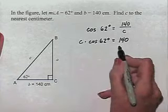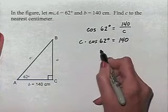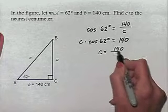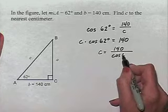And then next, divide both sides of the equation by the cosine of 62 degrees to find out that C is equal to 140 divided by the cosine of 62 degrees.